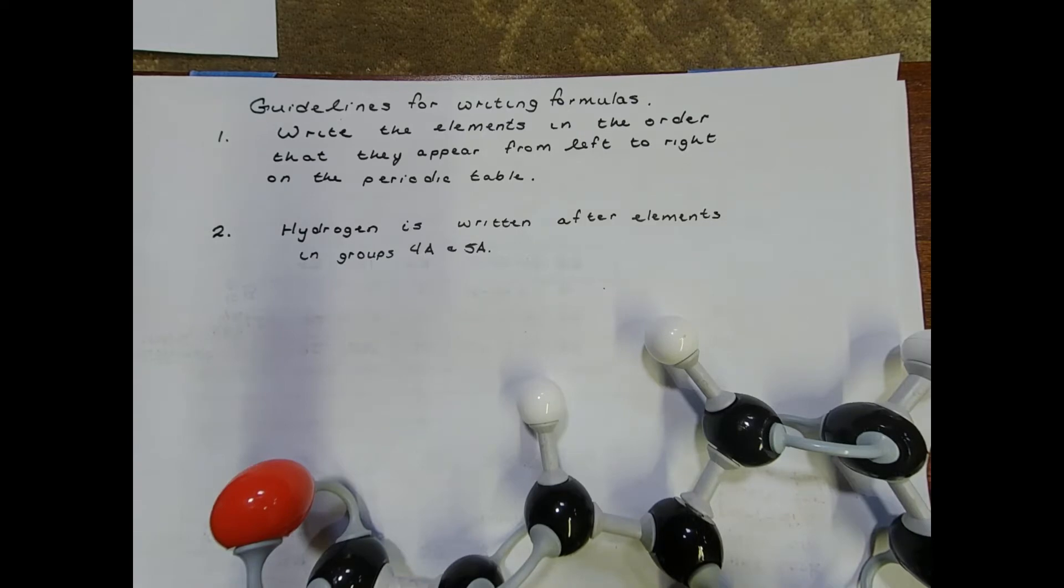Let's go over some guidelines for writing formulas. First thing, you're going to write the elements in the order that they appear on the periodic table. And you're going to read that periodic table from left to right. So something that's in group 1A, like sodium or potassium, would be written first before an element that's in group 7, like fluorine or chlorine. Your second guideline is basically an exception to the first rule. So typically, hydrogen is written first in the formula because it's in group 1A. But if you're dealing with an element in group 4A or 5A, hydrogen needs to come second or after that element.